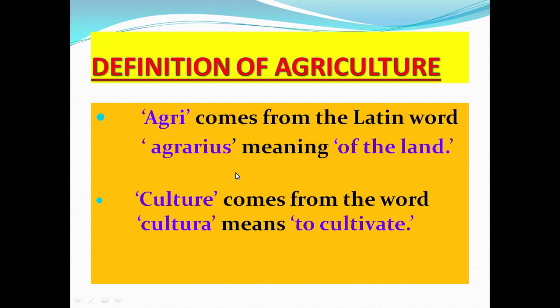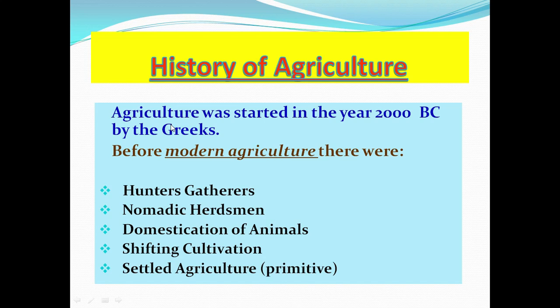The history of agriculture: agriculture was started in the year 2000 BC by the Greeks. Before modern agriculture, there were: one, hunter-gatherers; two, nomadic encampment; three, domestication of animals; four, shifting cultivation; and five, settled agriculture, which was primitive at the time.